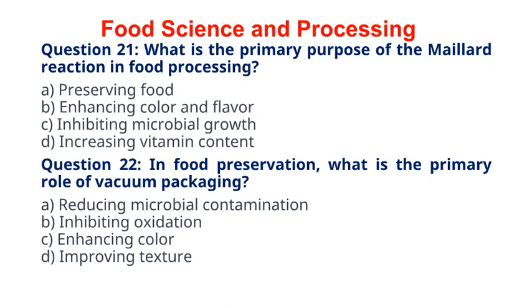Explanation. The Maillard reaction is a chemical reaction between amino acids and reducing sugars that contributes to the browning and development of flavors in cooked foods.